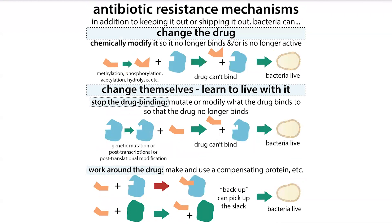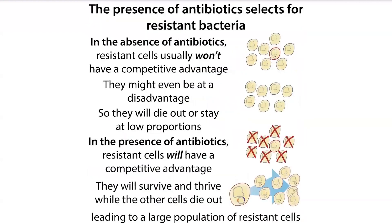If a bacterium has a random mutation that gives it some resistance, that bacterium now has a growth advantage in the presence of the antibiotic. In the presence of the antibiotic, that bacterium is allowed to grow, while the others are getting killed off. This increases the proportion of cells in your culture that are actually resistant.